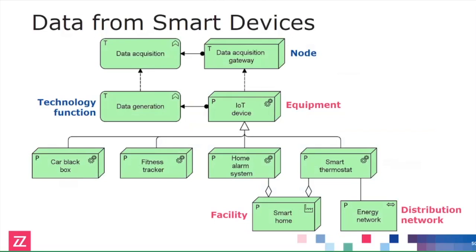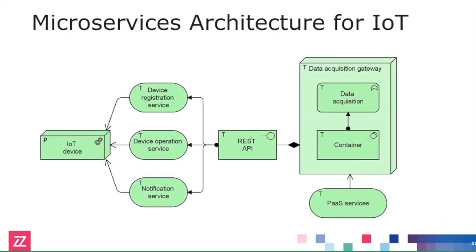This smart thermostat is also connected to another new concept in ArchiMate: the distribution network. Previously we could only model distribution networks used for communication data, but now we can also model distribution of physical materials or energy. So this is an energy network.